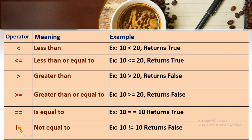This is how to write 'not equal to' in Java (!=). For example, 10 != 10 returns false, because 10 is equal to 10 — that is true — but here we are saying 10 is not equal to 10, so it returns false.